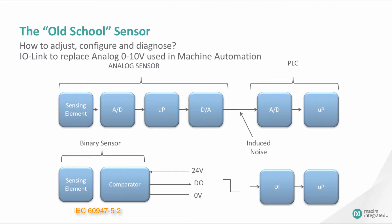Outputs can be configured as high-side switching, low-side switching, or push-pull. Binary sensors helped to solve the physical issues with sensor communication, but data was still limited to communication from the sensor to the master. However, sensors also had to be manually calibrated, and system errors and issues still required a technician's attention on the floor.